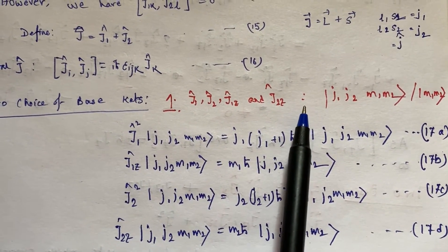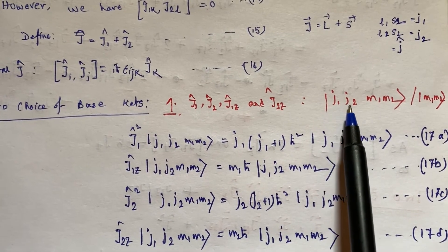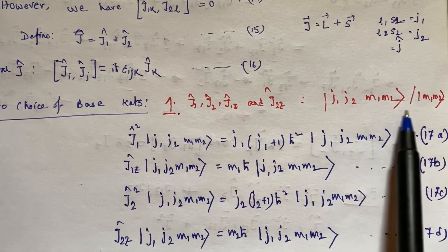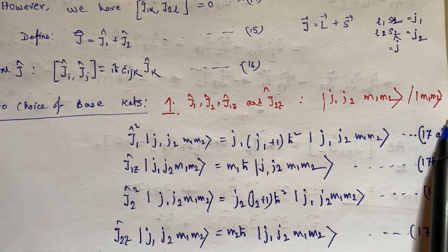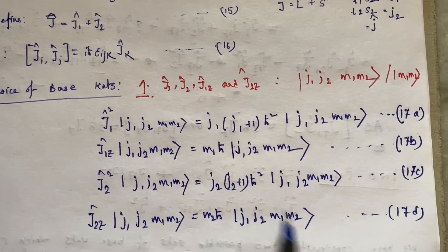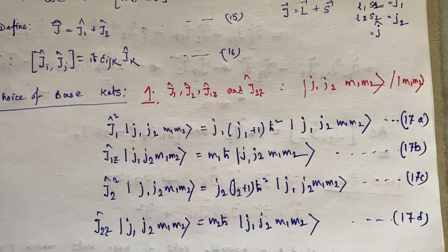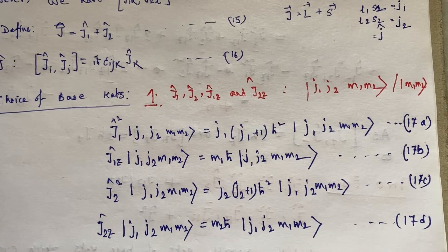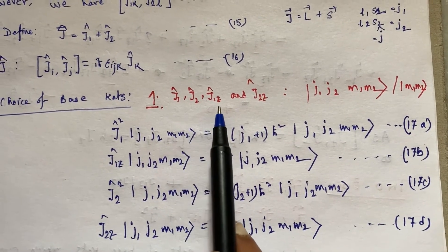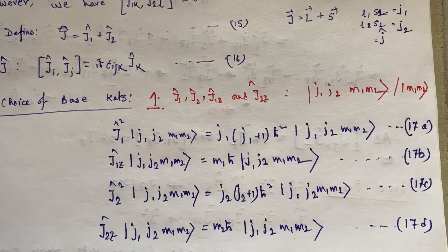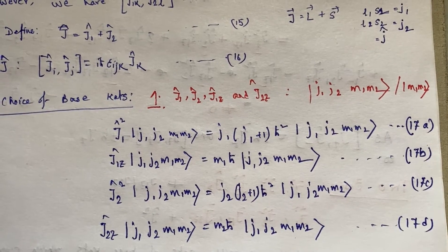these operators. Sometimes j₁ and j₂ are understood and only m₁, m₂ are written. These are the eigenvalue equations for J₁², J₂², J₁z, and J₂z.